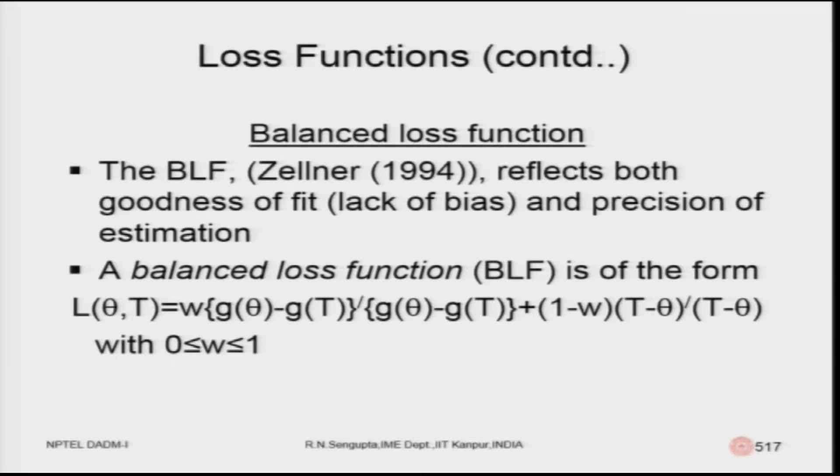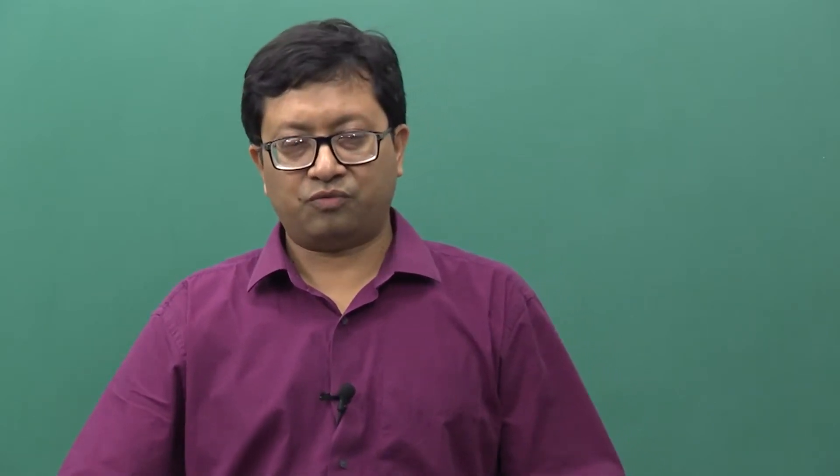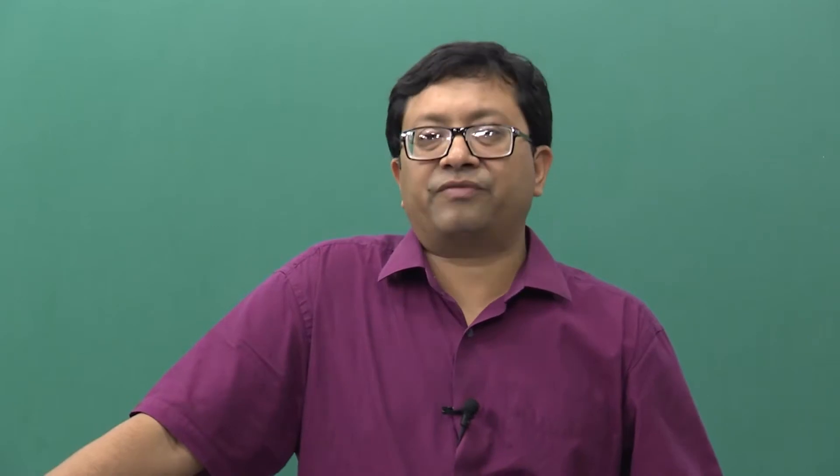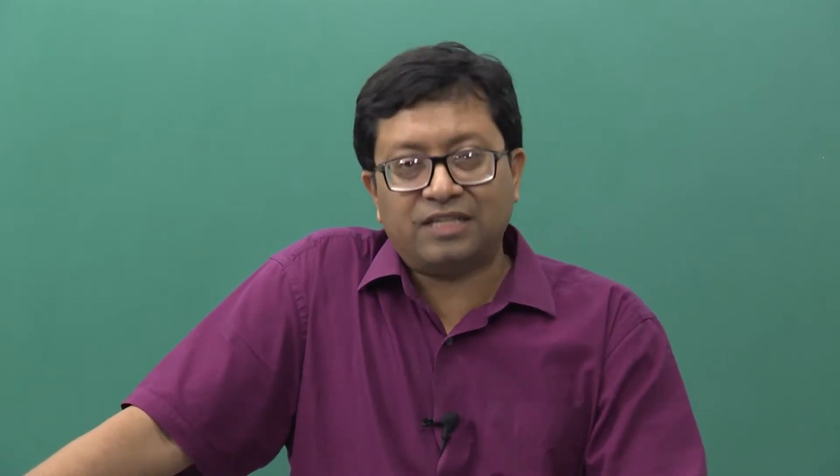In multiple linear regression, the values of the differences taken for t minus theta — where theta can be beta and t can be beta-hat — apply to all parameters. In vector form, beta_1, beta_2, beta_3 are the theta values and t_1, t_2, t_3 are the corresponding estimated values for theta_1, theta_2, theta_3.